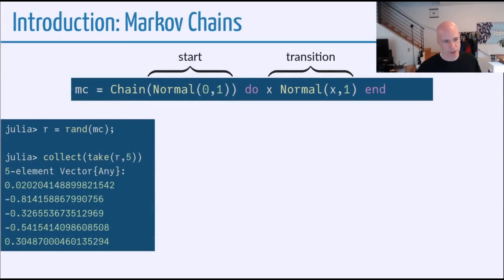So let's look at an example of Markov chains. A Markov chain in measure theory.jl, we would write this as mc equals Chain(Normal(0,1)). We use the chain combinator. And for this, we need to specify an initial distribution. The Markov chain is an infinite sequence of values, and here, the first value in that sequence will be drawn from a standard normal. The second part we need is a function from a value to another distribution.